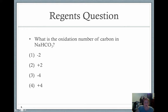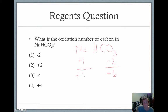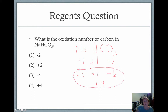What is the oxidation number of carbon in NaHCO₃? We have sodium, hydrogen, carbon, and oxygen. Oxygen has a charge of minus two times three, giving a total of minus six. Sodium has a charge of plus one, total plus one. Hydrogen has a charge of plus one, total plus one. So far we have plus two and minus six. To get to zero, minus six plus two is minus four, so carbon must have a charge of plus four. One plus one plus four minus six equals zero — carbon is plus four.